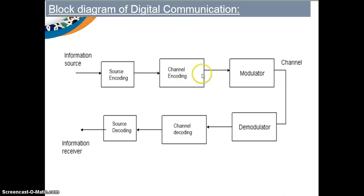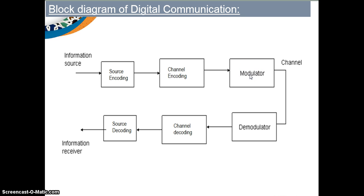After channel encoding, the signal is given to the modulator. Modulation is the process of superimposing the modulating signal on a carrier signal. You have already studied modulation in detail in the analog communication or communication systems module.